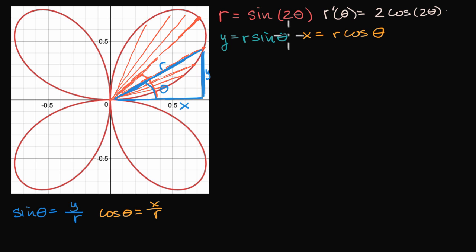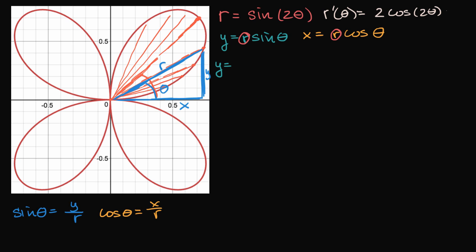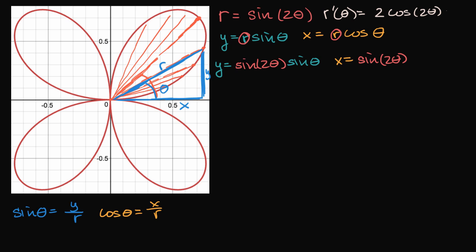Again, if this is going too fast, this is just a review of polar coordinates from pre-calculus. But now we can use these transformations to express the curve purely in terms of theta. Since r equals sine of two theta, we just replace r with sine of two theta. So y equals sine of two theta times sine of theta, and x equals sine of two theta times cosine of theta.